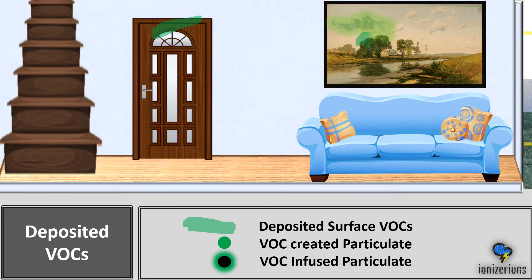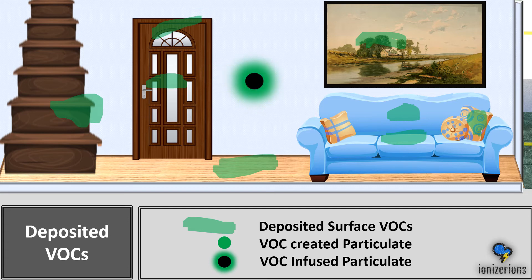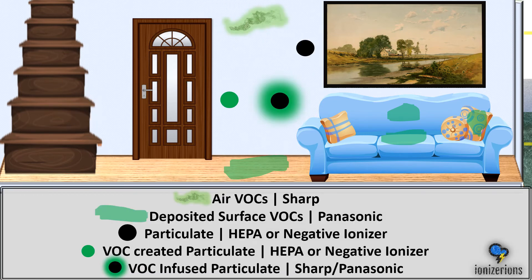Deposited VOC. As the gas molecule flies around your home, part of it will land on surfaces — your door, couch, floor, stairs. VOCs can also create particles through chemical reactions, or deposit on particles themselves — this is the toxicity I was referring to earlier. In terms of ionizer preferences: for air VOCs I like Sharp; for deposited surface VOCs I like Panasonic; for particles, HEPA or a negative ionizer; for VOC-created particulate, HEPA or negative ionizer; and for VOC-infused particulate, Sharp or Panasonic.